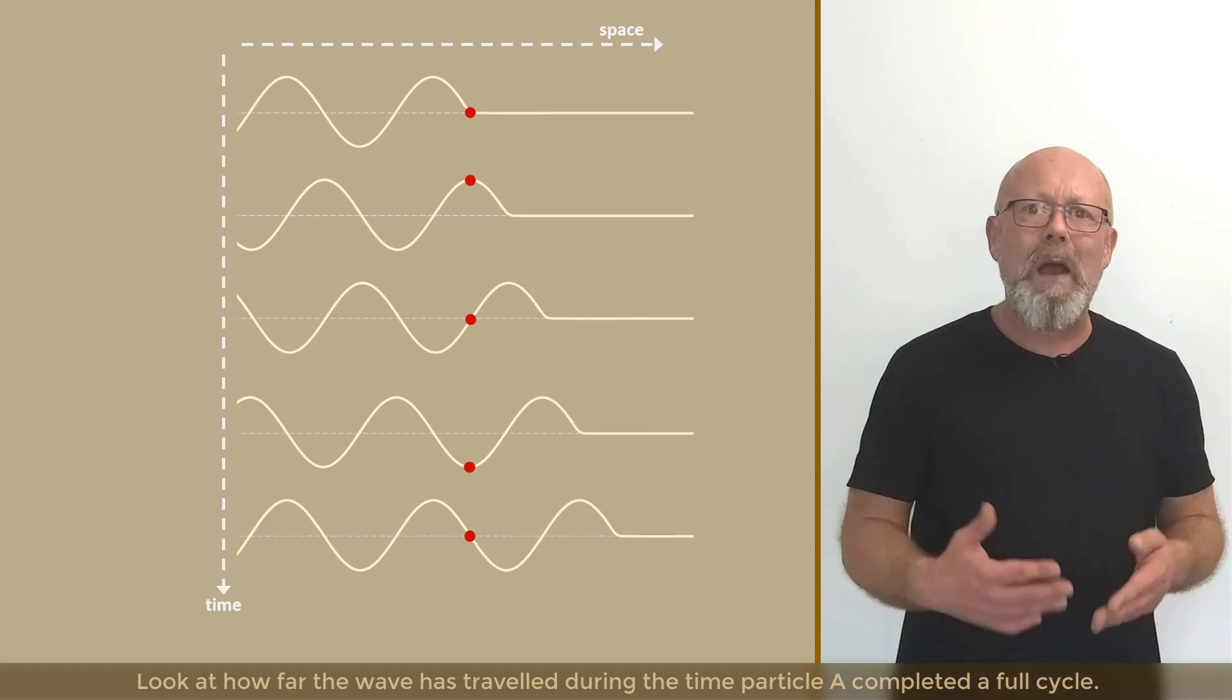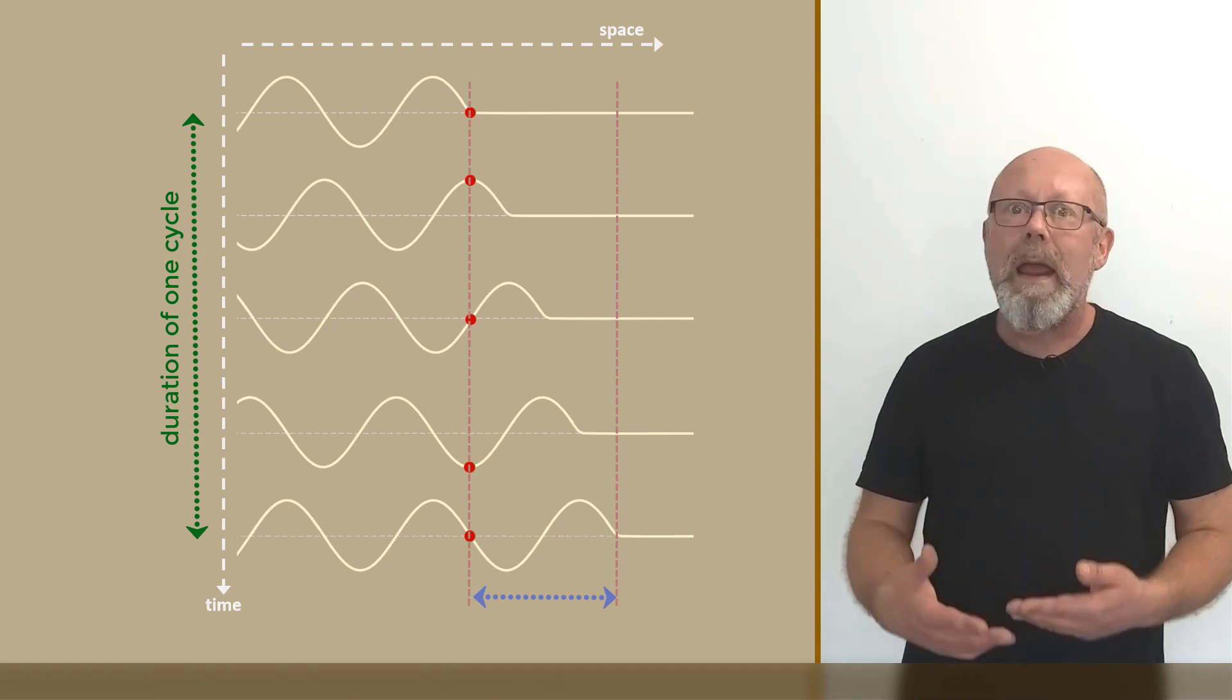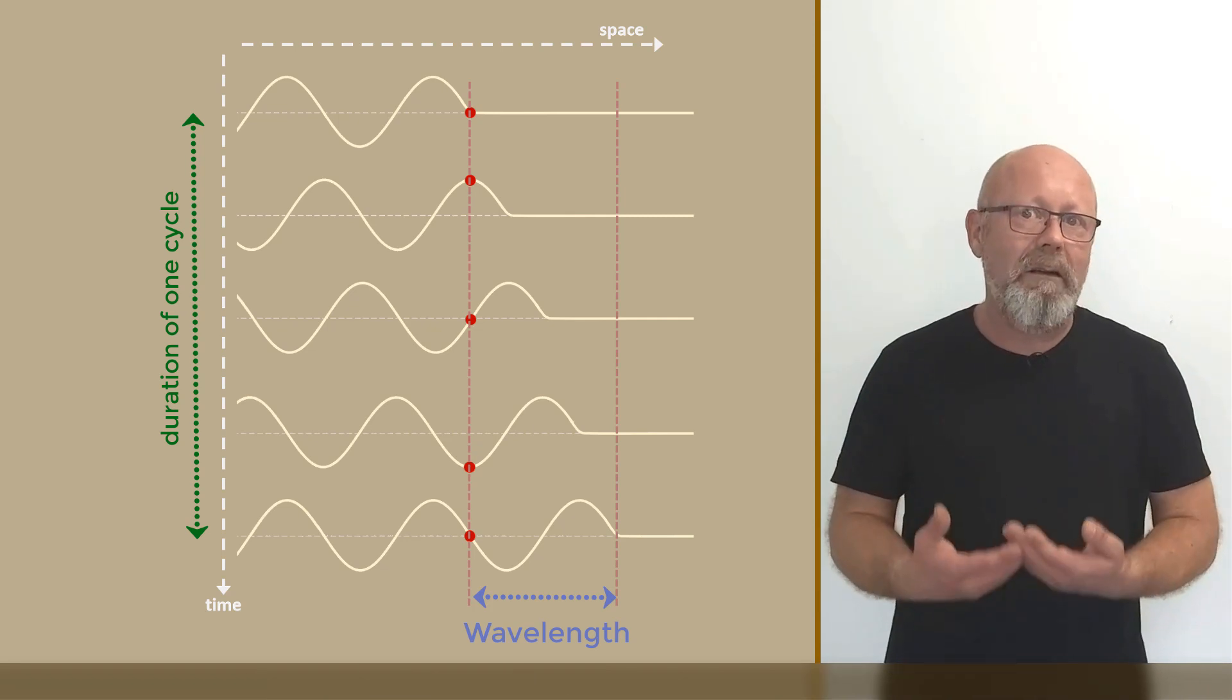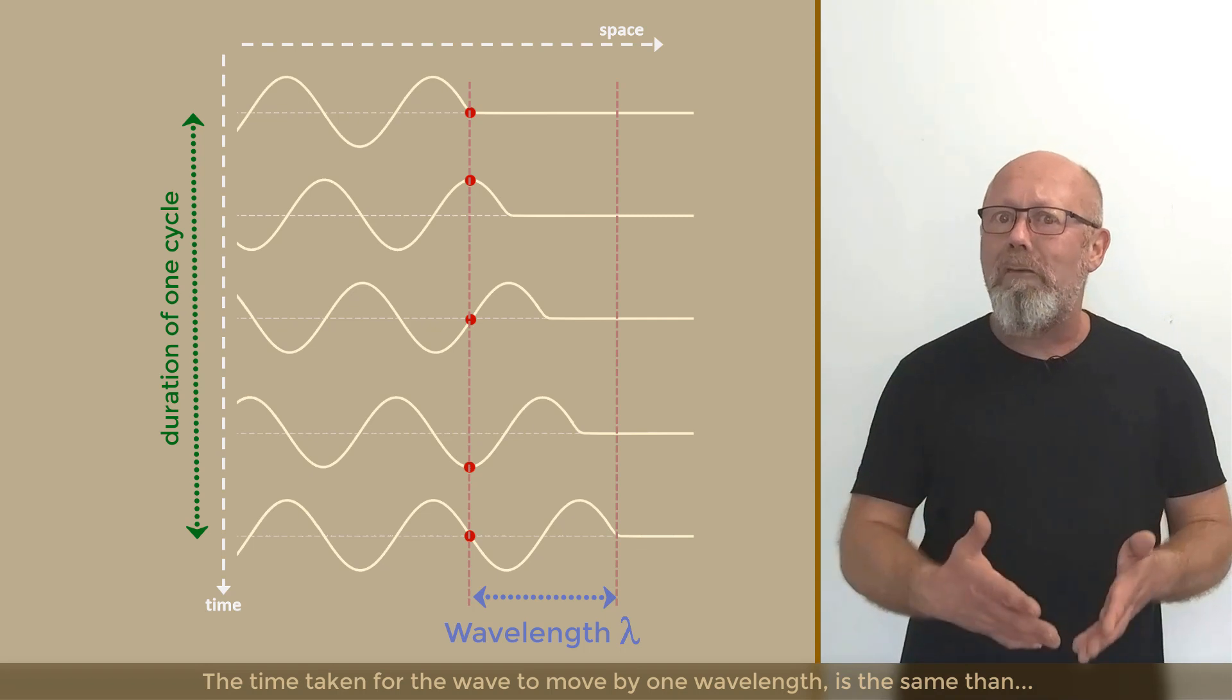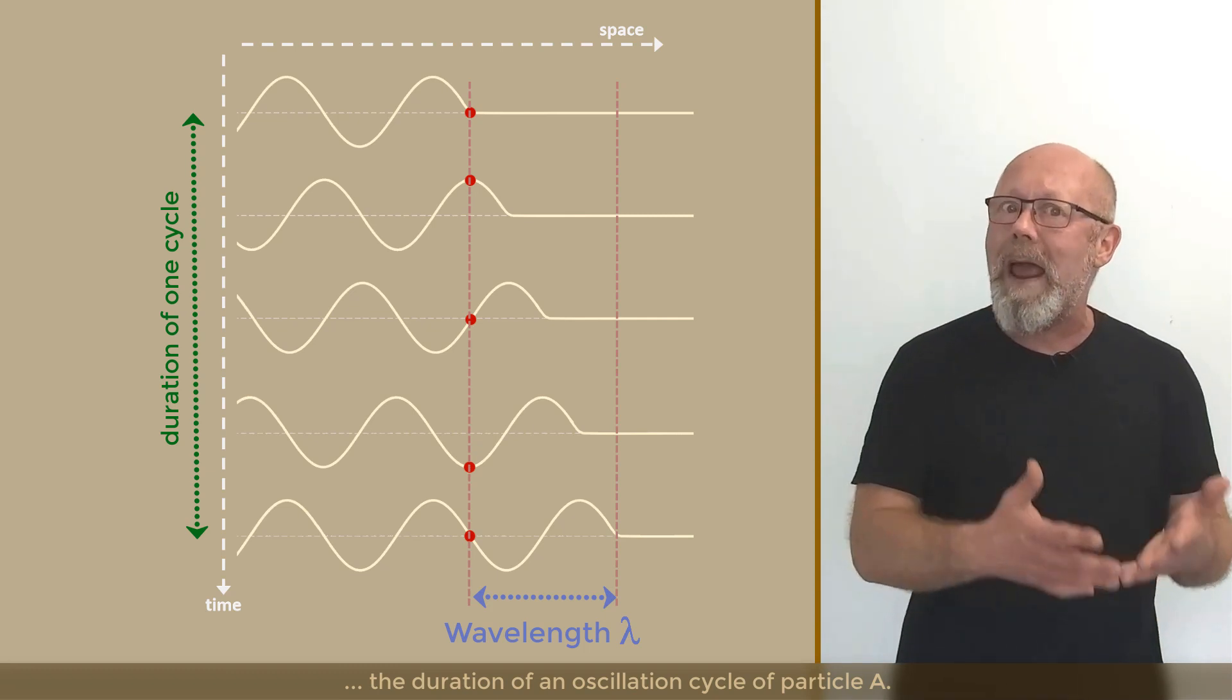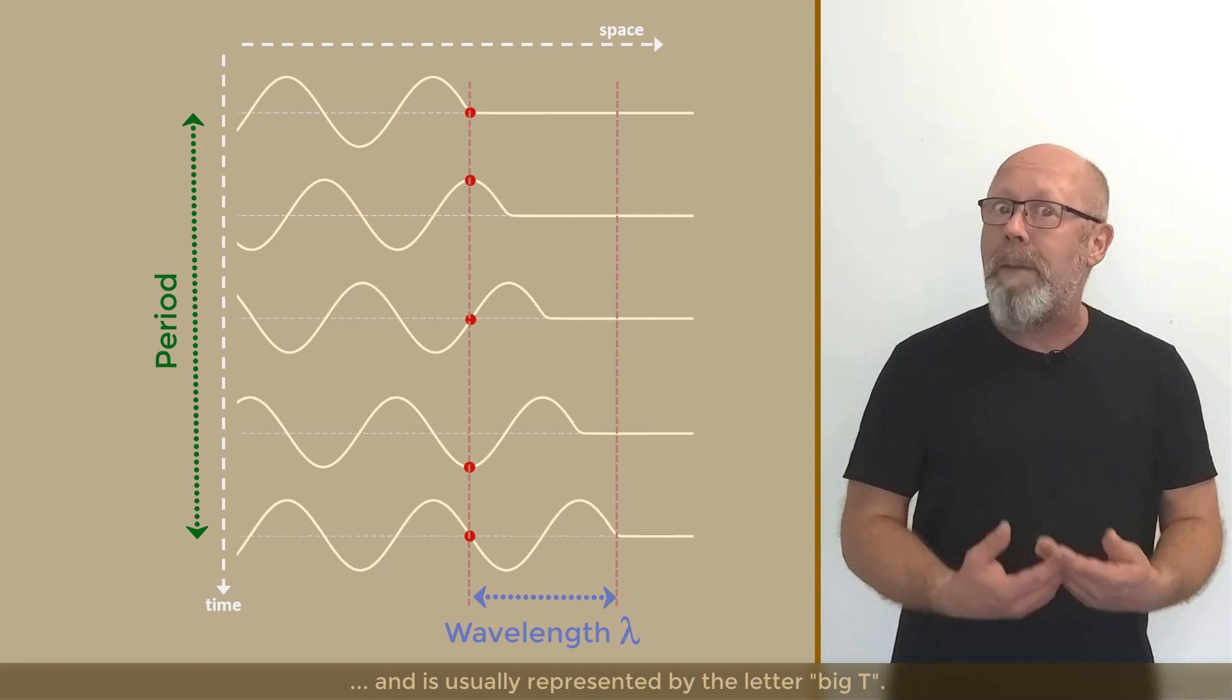Look at how far the wave has traveled during the time particle A completed a full cycle. The wave traveled one wavelength. The wavelength is usually represented by the Greek letter lambda. The time taken for the wave to move by one wavelength is the same as the duration of an oscillation cycle of particle A. This is called a period and is usually represented by the letter big T.